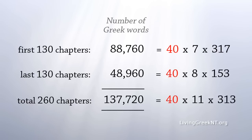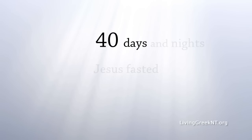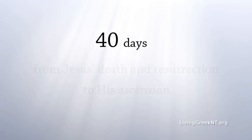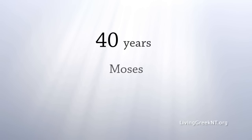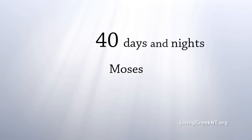40 is a number that shows up frequently in the plain text of the Bible. Jesus fasted for 40 days and 40 nights. There were 40 days from Jesus' death and resurrection to his ascension to heaven. At the time of the flood, it rained for 40 days and 40 nights. Moses was 40 years in Egypt, 40 years in Midian, and he led the Israelites for 40 years in the wilderness. Moses was 40 days and 40 nights on Mount Sinai, receiving the law.